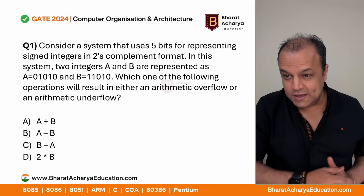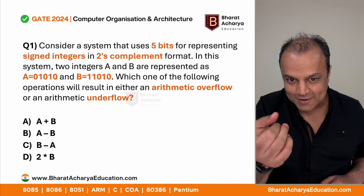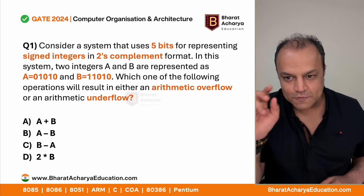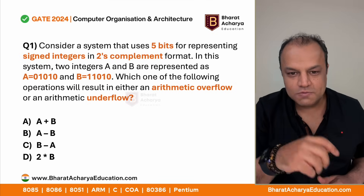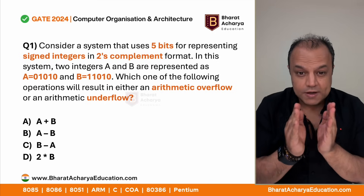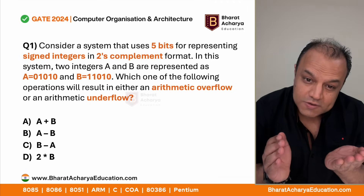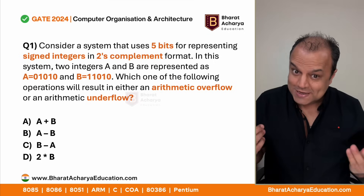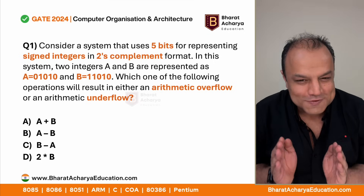When you've practiced enough, a question like this should just show its real self to you immediately. It's a five-bit signed number stored in two's complement form - A has a value, B has a value - which operation creates overflow or underflow? You should understand what signed numbers are, what the range of a five-bit signed number is, and the meaning of arithmetic overflow and underflow. Overflow means you go out of range on the positive side; underflow means you go out of range on the negative side.